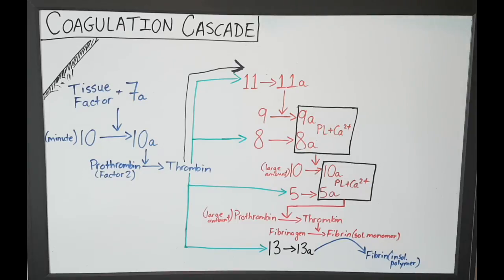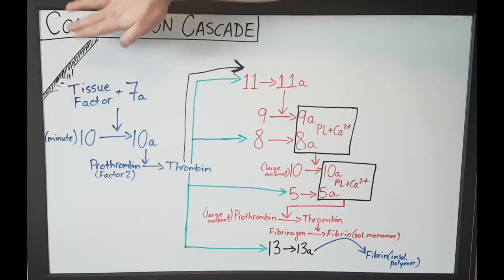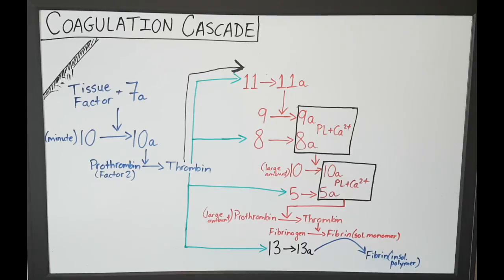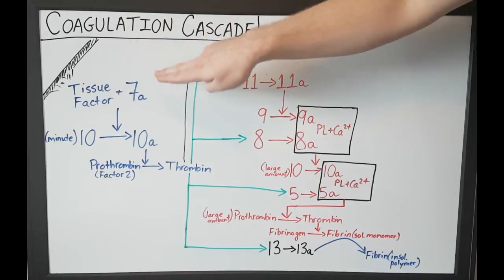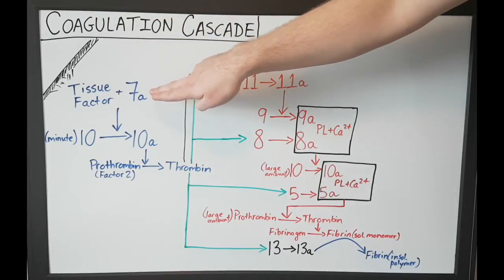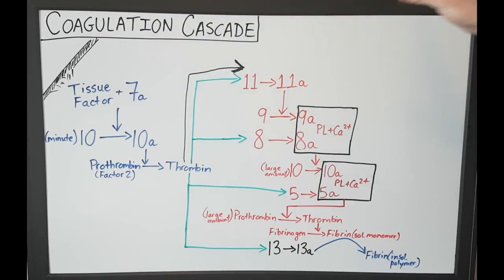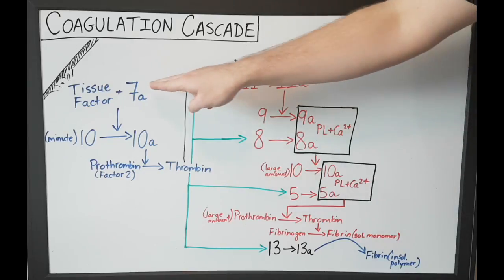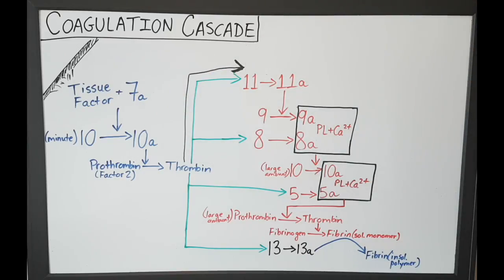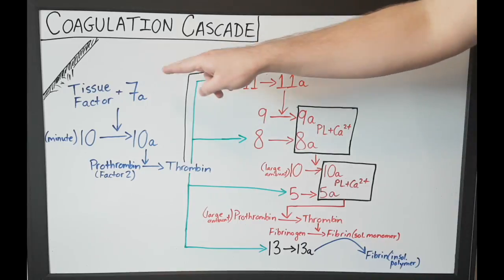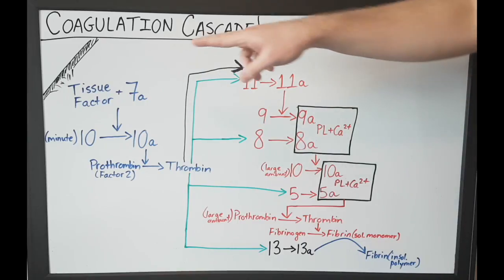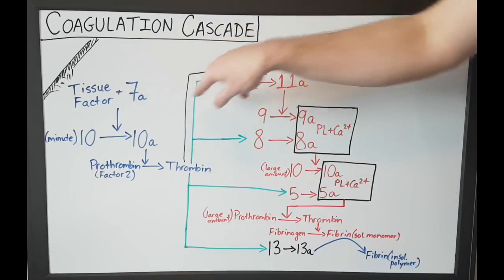So just to begin, say we've got some exposed endothelium here — maybe that's from a cut or maybe that's from damage to your blood vessel. From the trauma, you get some exposure of endothelium. What happens is that tissue factor and activated factor 7 — lucky number 7 — is released. I have a little 'A' here that just signifies activated, so when I have a little A, that just means the factor number is activated.